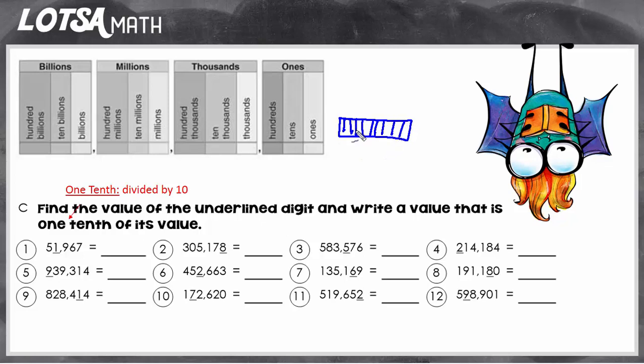So this is divided by ten. One-tenth means the same thing as divided by ten. So in these types of questions, you're going to first find the original value, and then you're going to divide that original value by ten. So let's look at some examples.